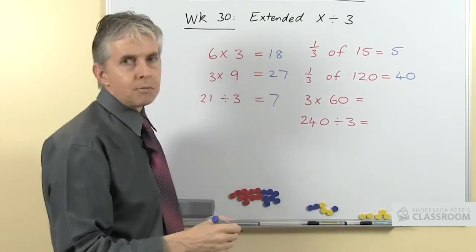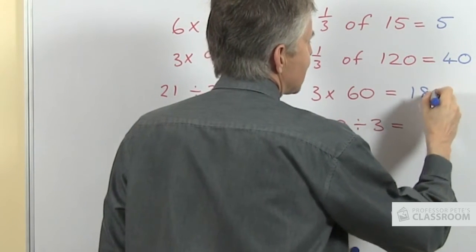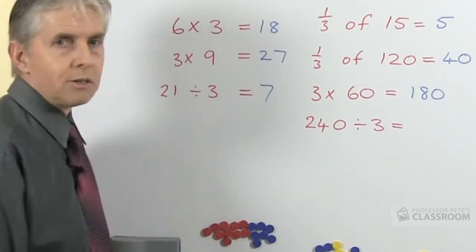Then an extended multiplication: 3 sixes are 18, so 3 lots of 6 tens is 18 tens, which are 180.